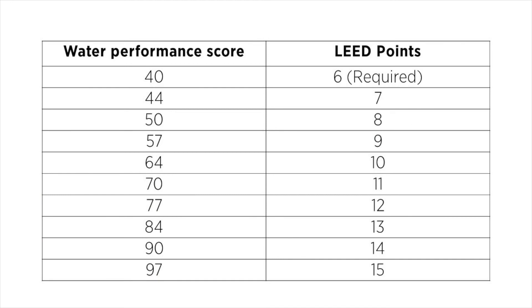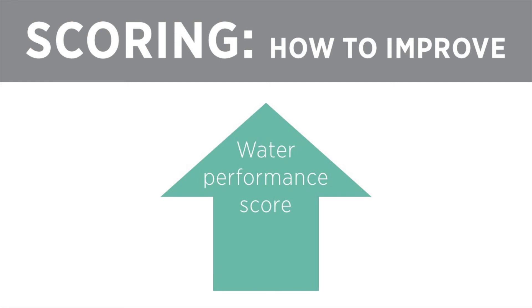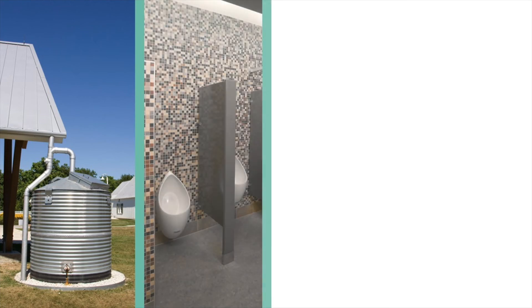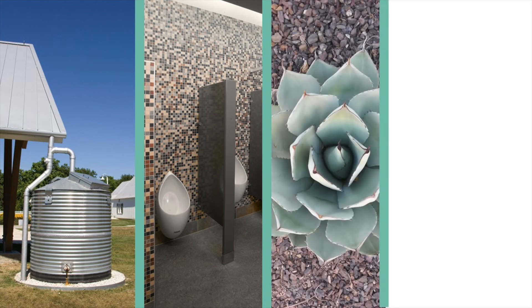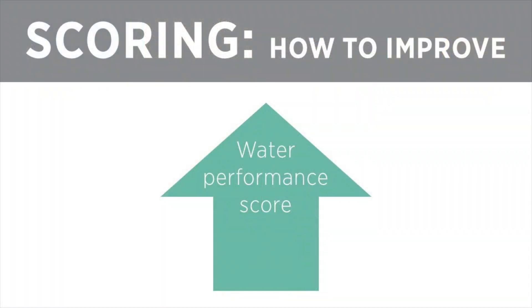Here's how the 0 to 100 water performance score translates into LEED points. As you can see, projects can earn up to 15 points in total. Once projects see how they are performing, they can use strategies to improve their score. These strategies come directly from the LEED v4 rating system. The indoor and outdoor water use reduction credits, as well as cooling tower water use and water metering credits, outline steps that projects can take to first reduce potable water use, then consider non-potable sources of water. As projects implement these strategies and use less potable water, their water performance score will rise.